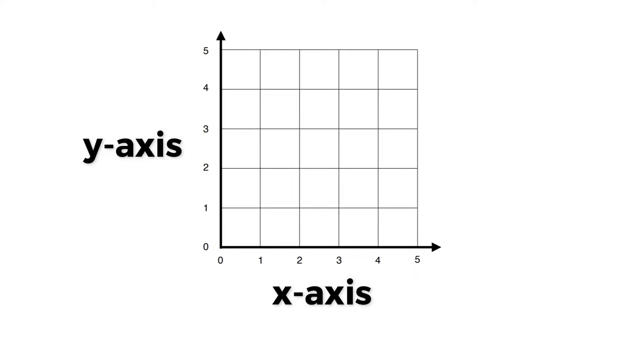People use coordinate planes to locate different points. Each point can be found using a different ordered pair. An ordered pair is a set of two numbers that tell us where to go on the coordinate plane.